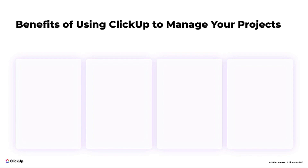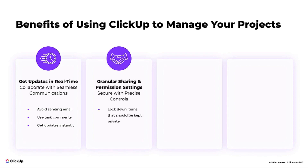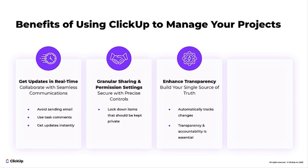Let's begin by discussing the benefits of using ClickUp to manage your team. Get updates in real-time with seamless communications — avoid sending emails back and forth, communicate via task comments to keep a record of events, and get updates instantly via notifications. Secure your content with granular sharing and permission settings — lock down any space, folder, or list, or even an individual task that shouldn't be seen by everyone.